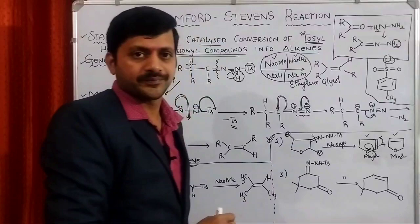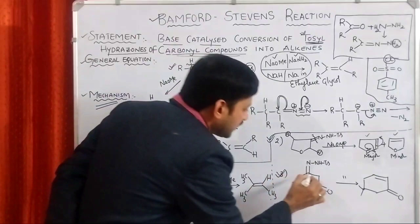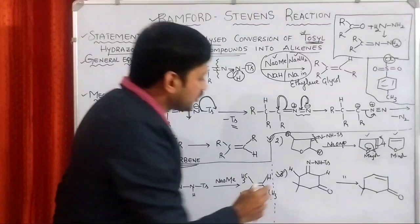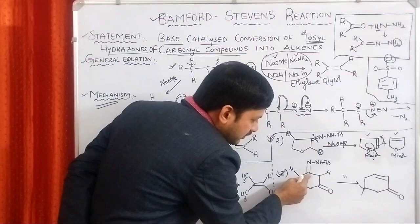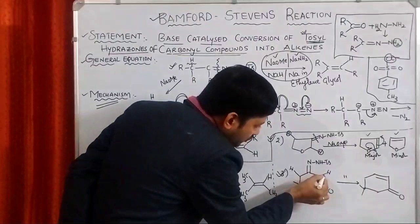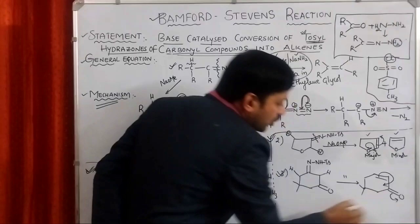The last example is very simple. Here also similar kind of situation. Here one hydrogen is there. Here also one hydrogen is there. If you remove this hydrogen, you will come up with pi bond here. Otherwise, if you remove this proton, the pi bond will be present here. If you remove this proton, whatever the pi bond it is forming, it is going to have the conjugation with the oxygen.